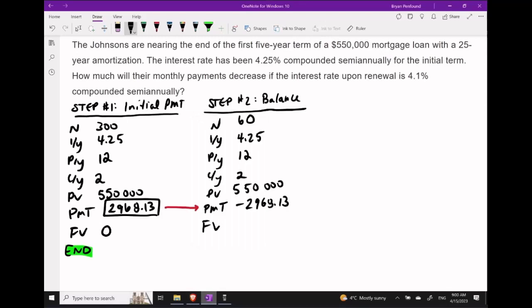Next, what we want to do in step two is try to figure out the balance that's going to be remaining on the mortgage after this first five-year term. So we're going to decrease N down to 60 because 5 times 12 is 60. So we've made 60 of these equal-sized payments. We are also going to have to program in the payment size. We're going to do that as a negative $2,968.13. All of our other parameters should be able to stay the same.